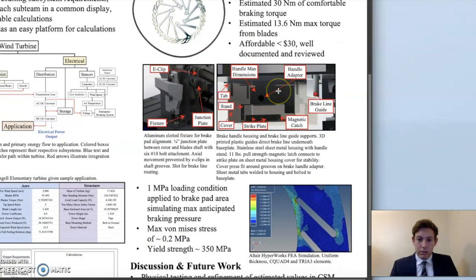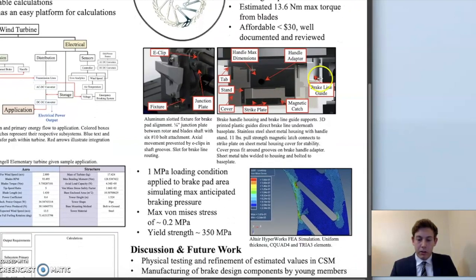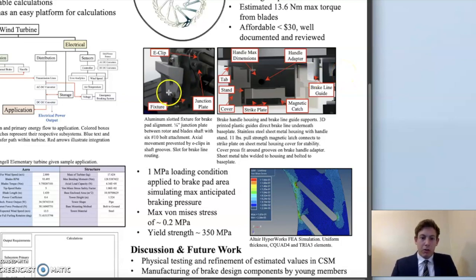The housing for the handle is my favorite part because it incorporates so many different manufacturing methods. The brake line is routed down from the pad portion down through the base plate and is guided through these 3D printed guide pieces down to the housing for the handle, which is made up of stainless steel sheet metal.